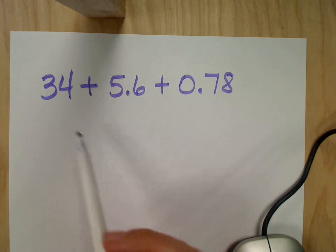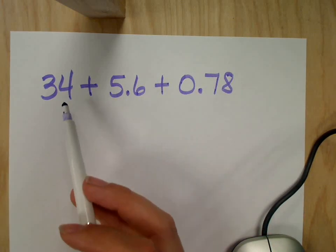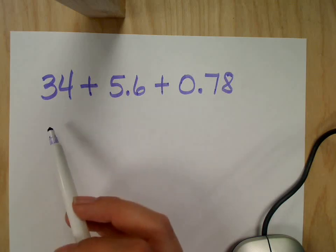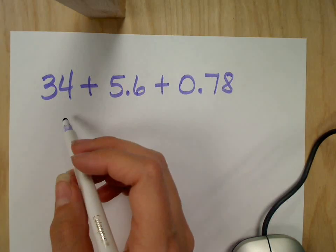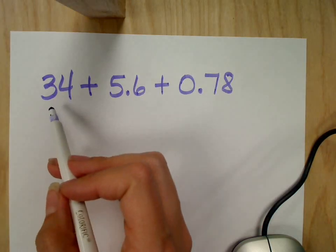34 is my biggest number. And because I'm adding on to 34, will my answer be bigger than 34 or smaller? Bigger. So if I end up adding all these together and not getting something bigger than 34, I know I've made a mistake.